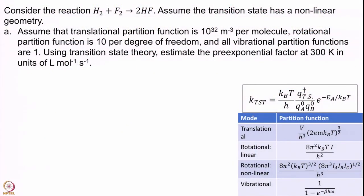We are going to look at the reaction H2 plus F2 going to 2HF, and let us assume that the transition state is non-linear. The first part: assuming the translational partition function is given to be 10 to the power of 32 meter⁻³ per molecule, the rotational partition function is 10 per degree of freedom, and all other vibrational and electronic partition functions are 1.